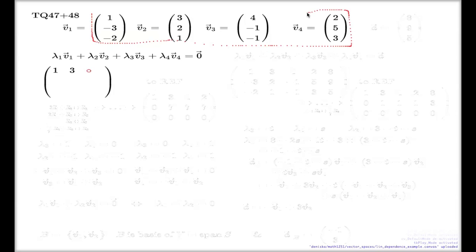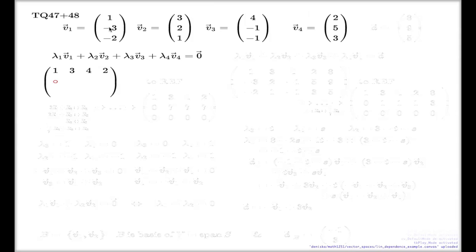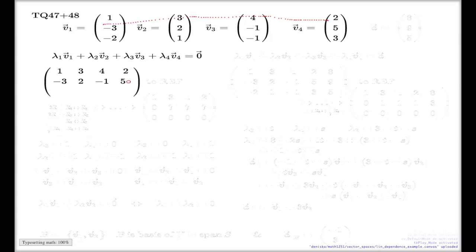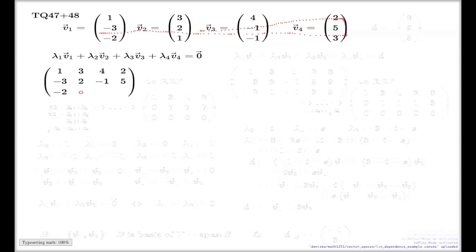Here are the columns: the first row is (1, 3, 4, 2) — taken straight from the first components. The second row is (-3, 2, -1, 5) — the second components of my vectors. The third row comes from the third components of my vectors.